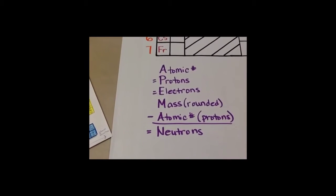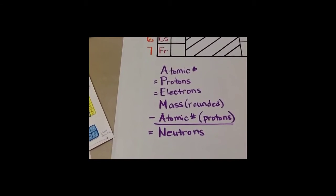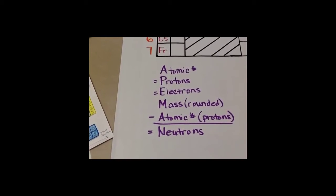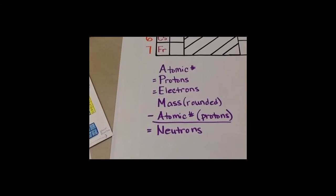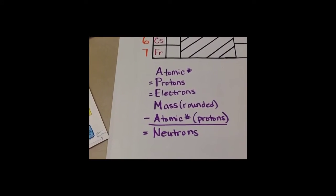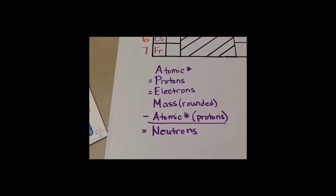Atomic number equals protons equals electrons. Mass minus atomic number equals your neutrons.